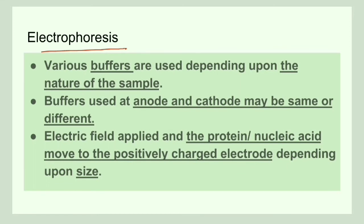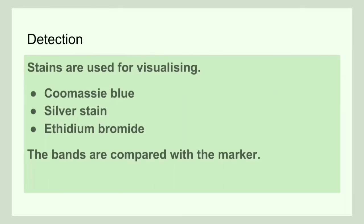The various buffers used in electrophoresis vary and depend upon the nature of the samples. The buffers at the cathode and anode may be the same or different. When an electric field is applied on the protein or nucleic acid, since they are negatively charged, they move towards the positively charged electrode. Smaller molecules move faster and larger molecules move slower, and this movement is based on the difference in molecular weight. The basic principle of any electrophoresis is that smaller molecules move faster and larger molecules move slower.